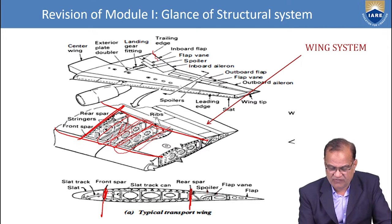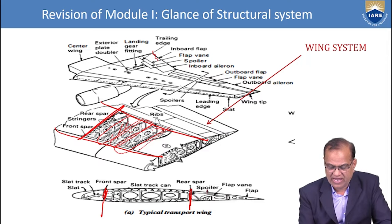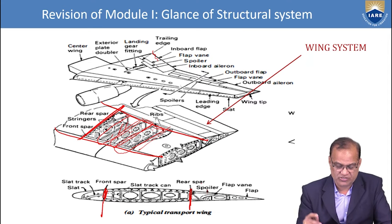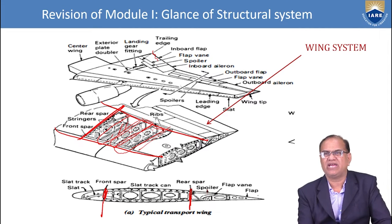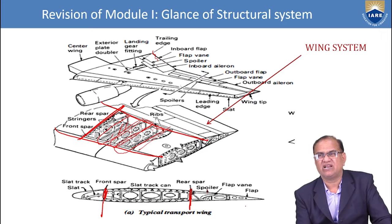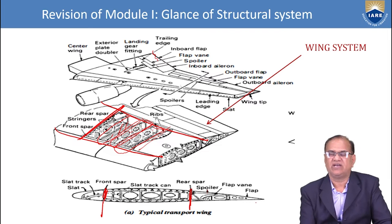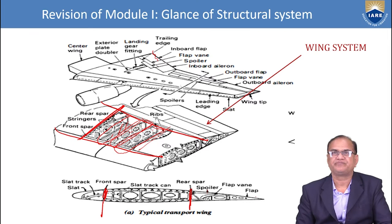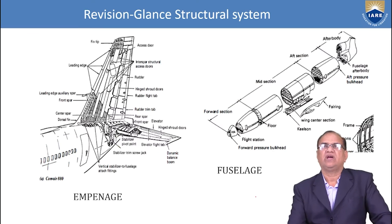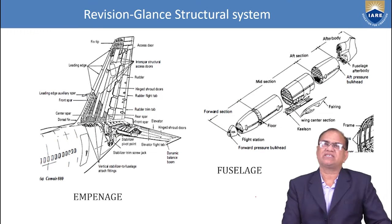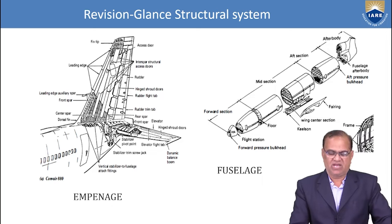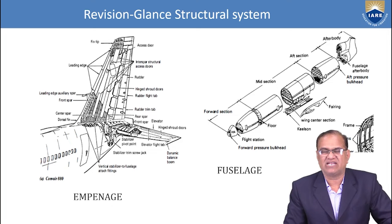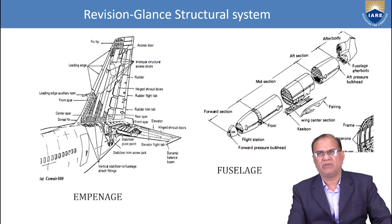Here is the spoiler, here is the flap vane, and the flap will move from here to here — this is the flap. So here it is shown a sectional view of the wing. Now I will discuss about the empennage and the fuselage.